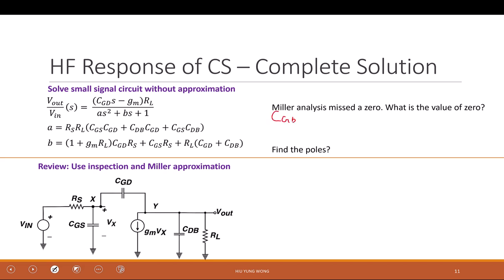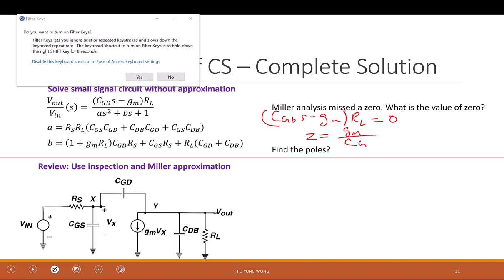CGD S minus gm times RL equal to zero. So as a result, zero equals to gm over CGD.